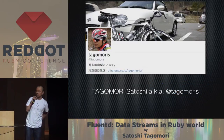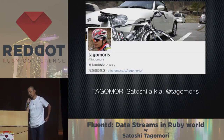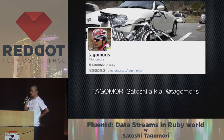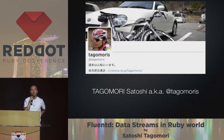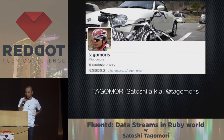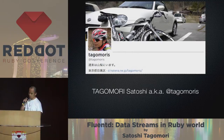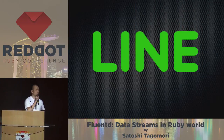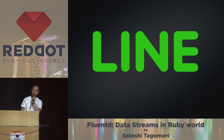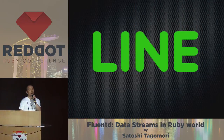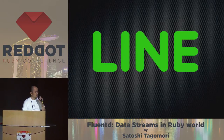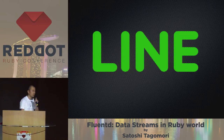I am Satoshi Tagomori, also known as Tagomorist — that is my Twitter and GitHub account name. I am working at LINE Corporation, a company serving a messaging application called LINE.